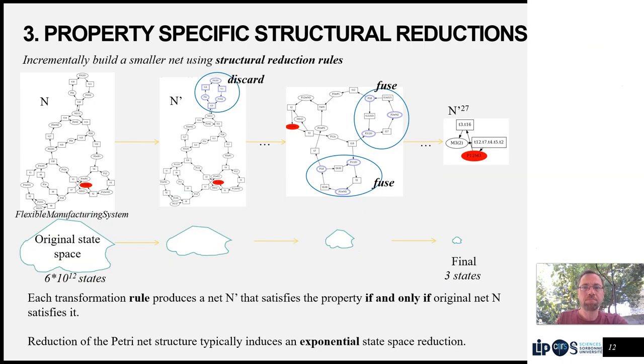The third part is the property-specific structural reductions that give their name to the paper. We apply reduction rules that go from a net n to a net n prime, which preserves the properties of interest and is smaller, either because we discard parts of the net or because we accelerate over parts of the net.